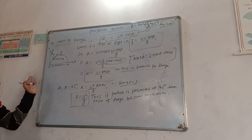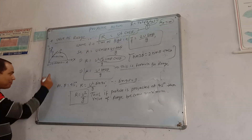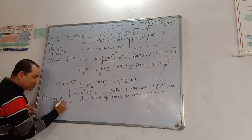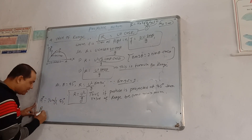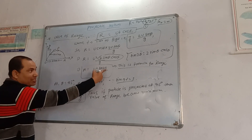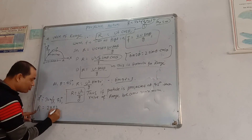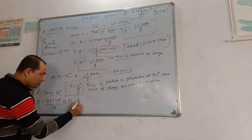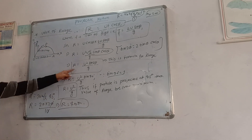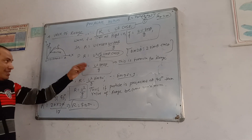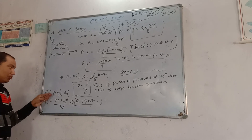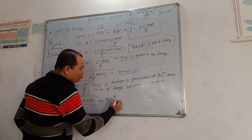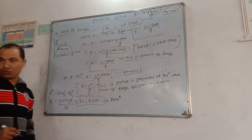Let a particle be projected with 20 meters per second at an angle of 45 degrees. Find the range. Since theta is 45 degrees, sin 90° equals 1, so range R = u²/g. Here u² = 20 × 20 = 400. Taking g = 10, the range will be 400/10 = 40 meters. If thrown at 0° the range is 0; at 90° the range is 0; but at 45 degrees the range is maximum at 40 meters. To find maximum range, theta must be 45 degrees.